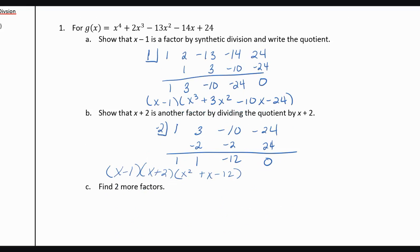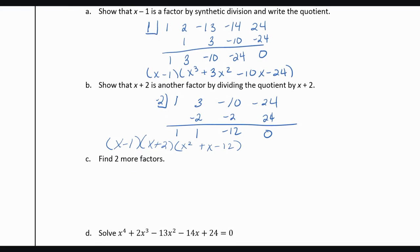Now it says, find 2 more factors, that means we want to factor that quadratic, and that's what we learned in unit 3, how to find those zeros. So we have x minus 1, x plus 2, and now this one happens to factor as x plus 4, and x minus 3. So we've now completely factored it.